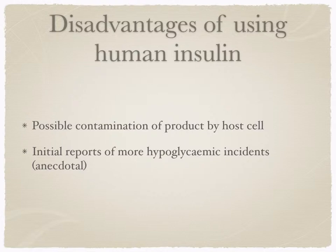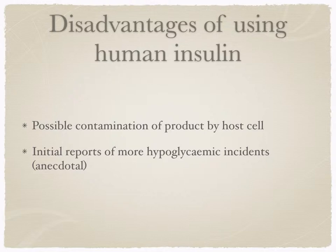Disadvantages would be possible contamination of the product by the host cell, although purification processes have eradicated this problem. Yeast is also being used as a vector and it secretes an almost complete insulin molecule, so less purification is needed. There were initial reports of more hyperglycemic incidents using human insulin rather than porcine; however, these were anecdotal and not supported by evidence.